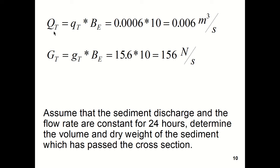The total sediment volumetric flow rate is q sub t times b sub e. So just inserting the numbers, it's 0.006 cubic meters per second of sediment going downstream. And likewise, the dry weight total sediment going downstream is simply g sub t times the effective width, or 156 newtons per second going downstream.